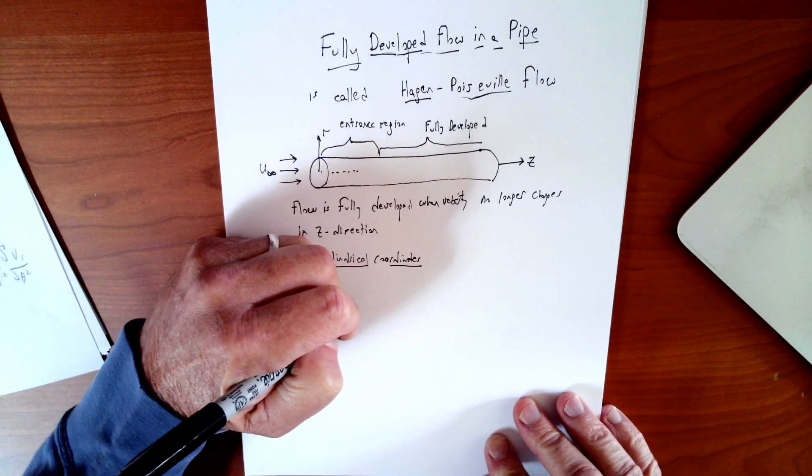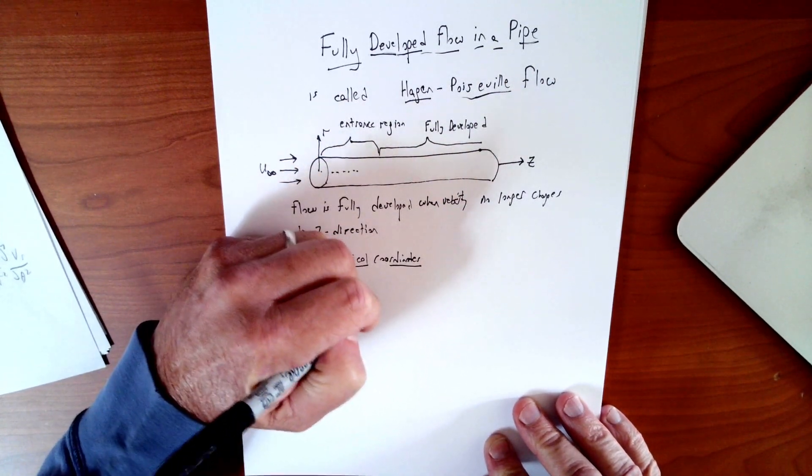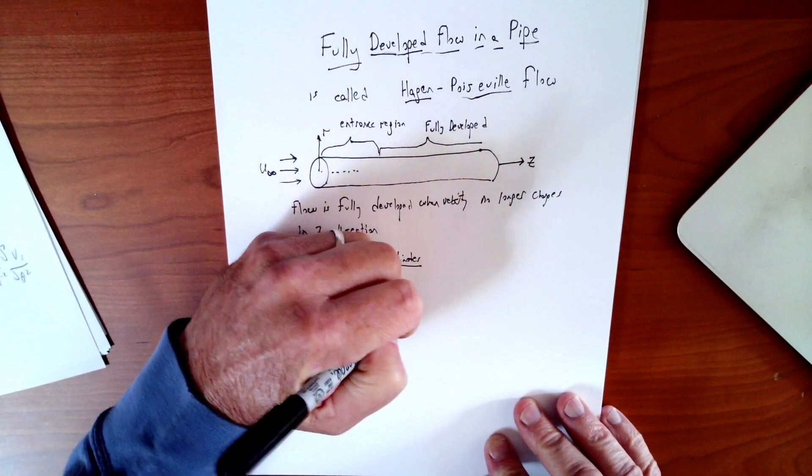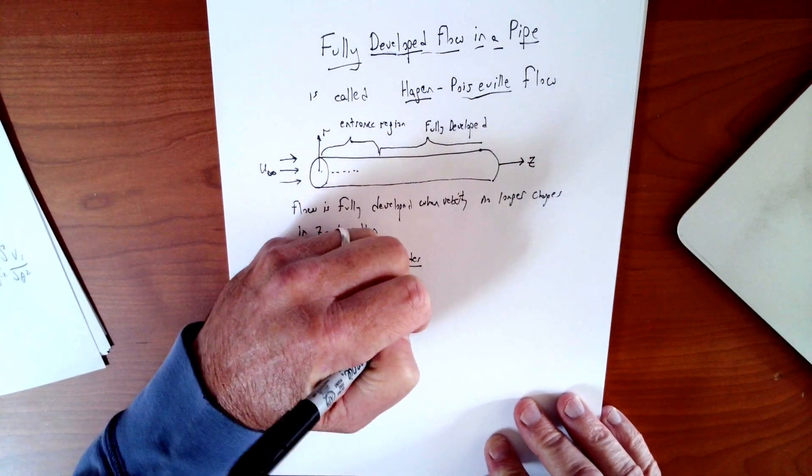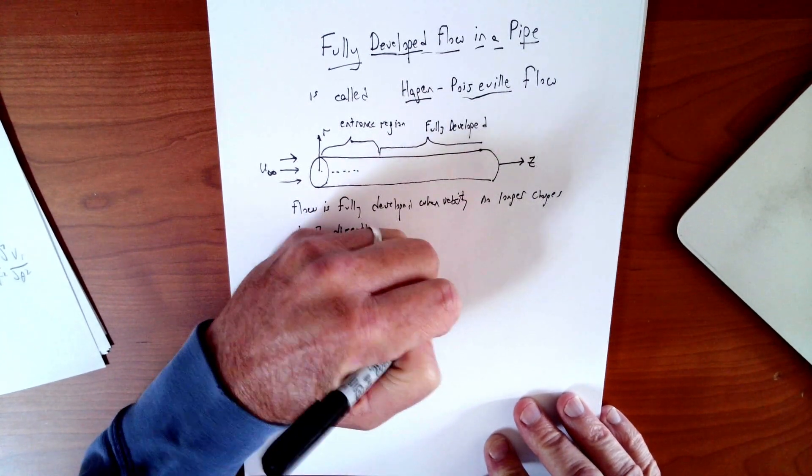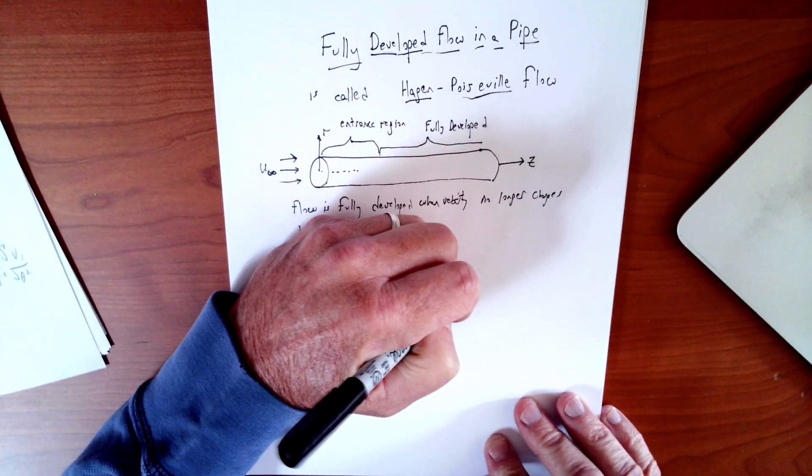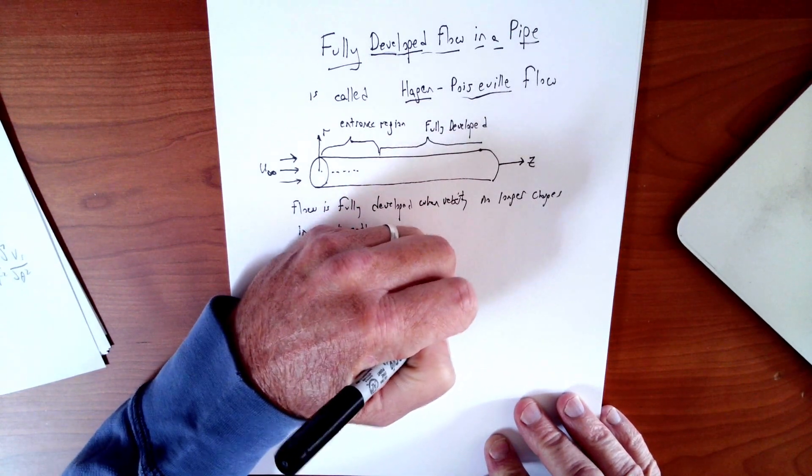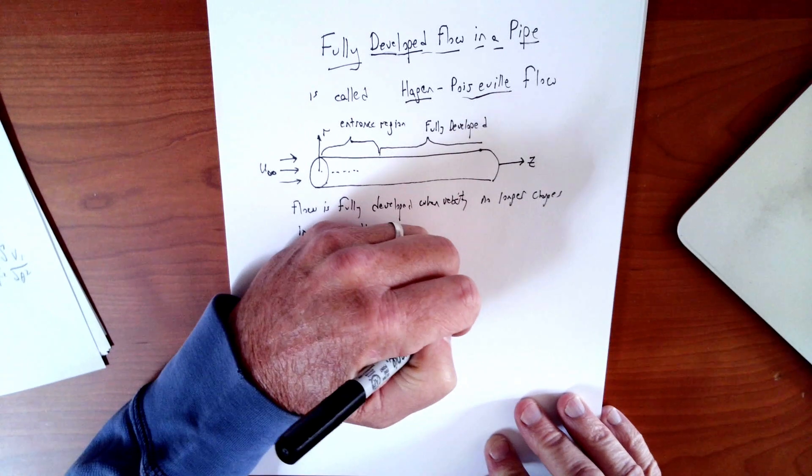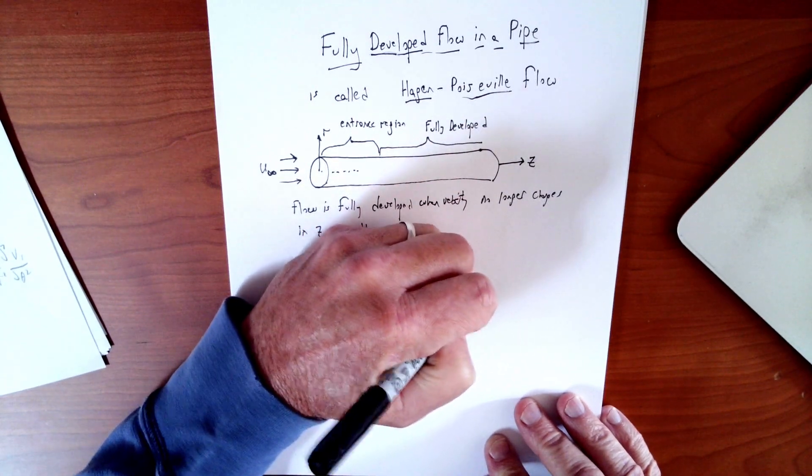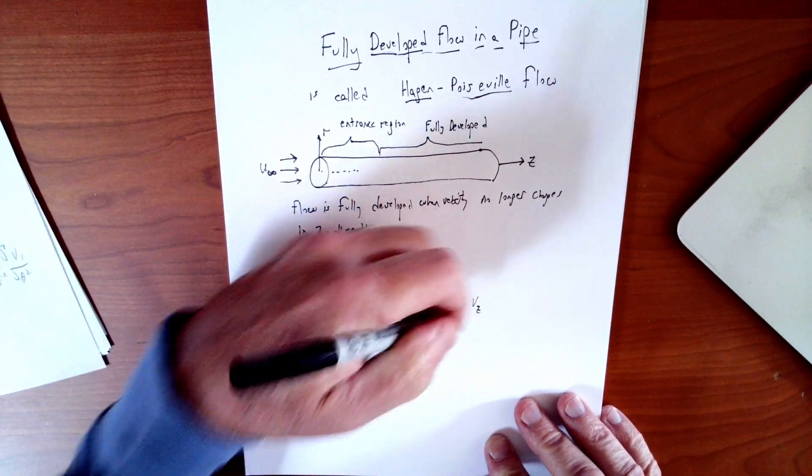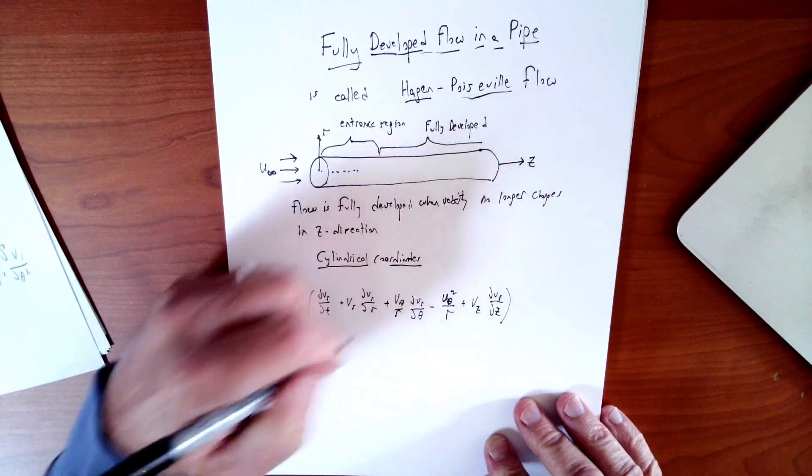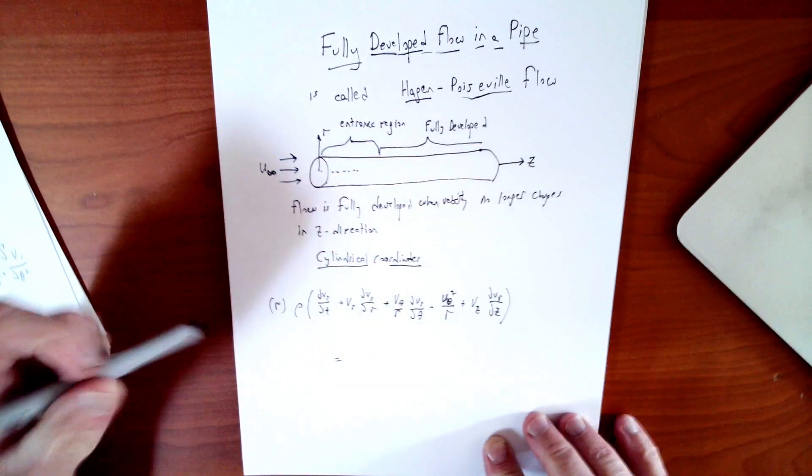So the Navier-Stokes equations in cylindrical coordinates look like this. They are quite complicated. Of course, they're quite complicated in any coordinate scheme, these nonlinear differential equations. But in cylindrical coordinates, they take on even a bit more complexity. So that's a theta. I'll read this out to you after I write it all down for you.